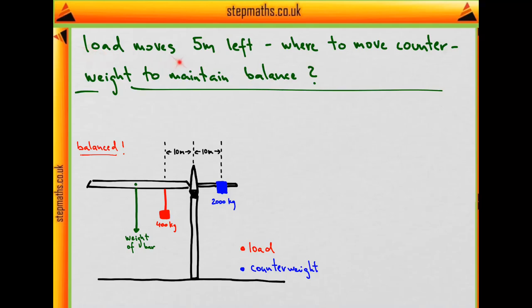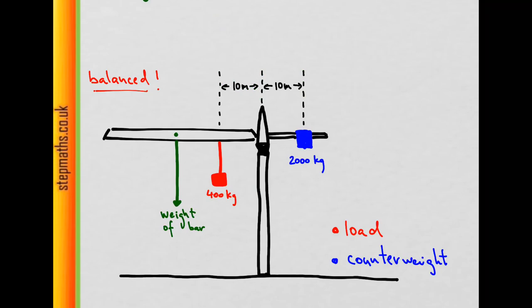Later the load moves by 5 meters to the left, and the question is where we need to move our counterweight to maintain the balance. The red mass is going to move to the left, and we can immediately intuitively see that the counterweight is going to have to move to the other direction to maintain balance and for the bar not to tip over. The counterweight is definitely moving to the right, but the question is by just how much?